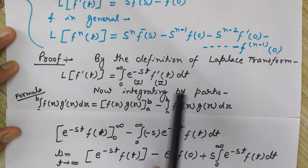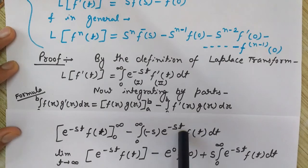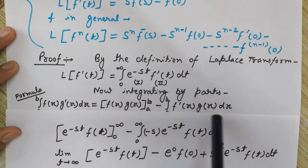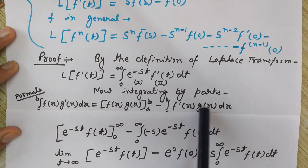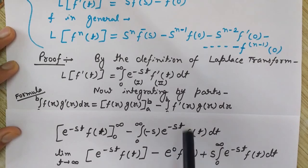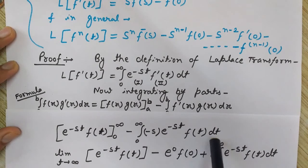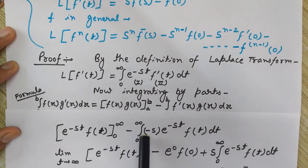Minus the limits 0 to infinity, and the differentiation of the first function e^(−st): its differentiation is e^(−st) times (−s). Then the integration of the second function, f'(t), has integration f(t), and this is all integrated from 0 to infinity dt.